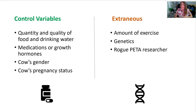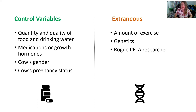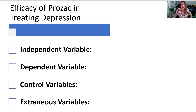On the extraneous side, assuming these are happy free-range cows frolicking in a meadow, we might not be able to control whether the cow that ate the Milk Dud got a sugar rush and started running laps — all that cardio making her healthier and produce more milk. Or it could be genetics. Or maybe a rogue researcher, a PETA sympathizer, was secretly not giving any cows the Milk Duds. These are all extraneous variables that could impact your results.